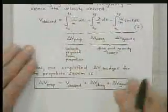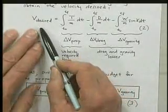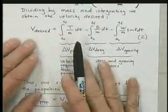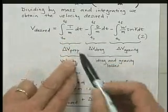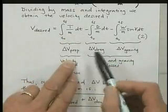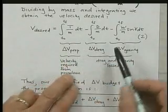Taking our equation two, we have the desired velocity is the integral of thrust over mass dt. This is what the propulsion system is providing by thrusting, and we're assuming our initial velocity was zero by the way.